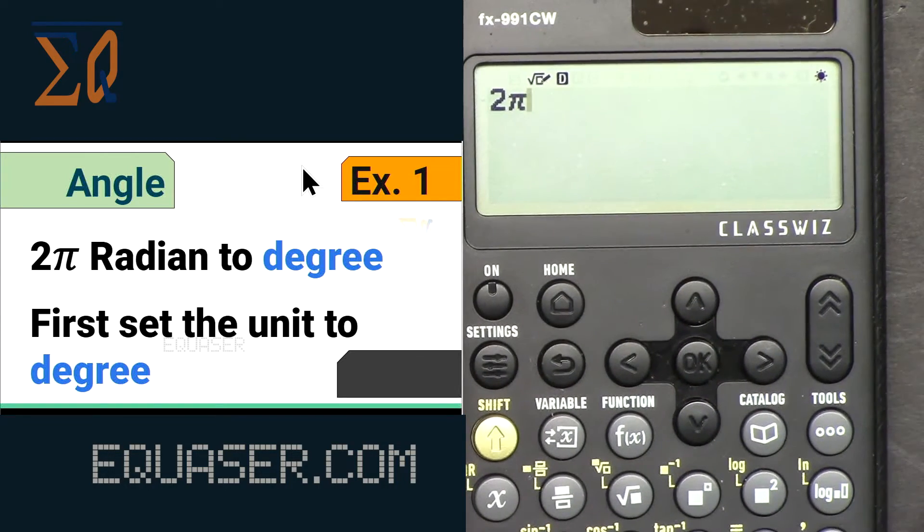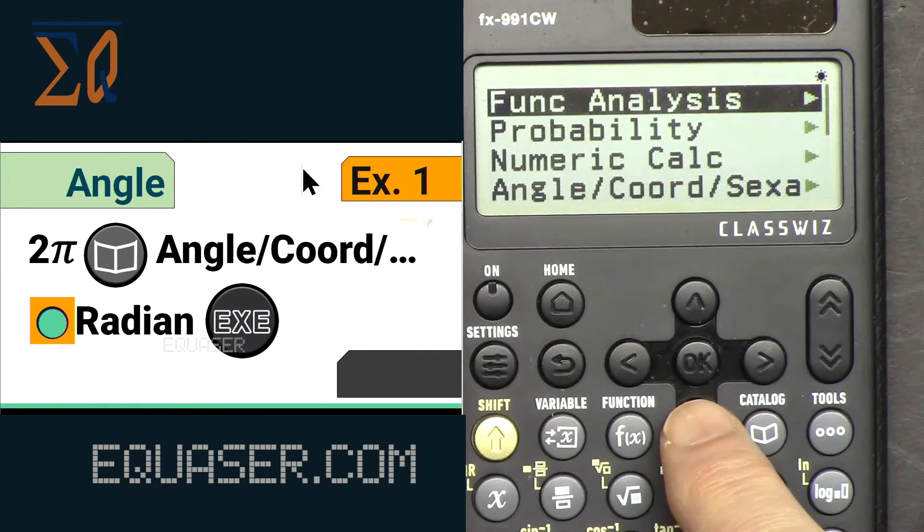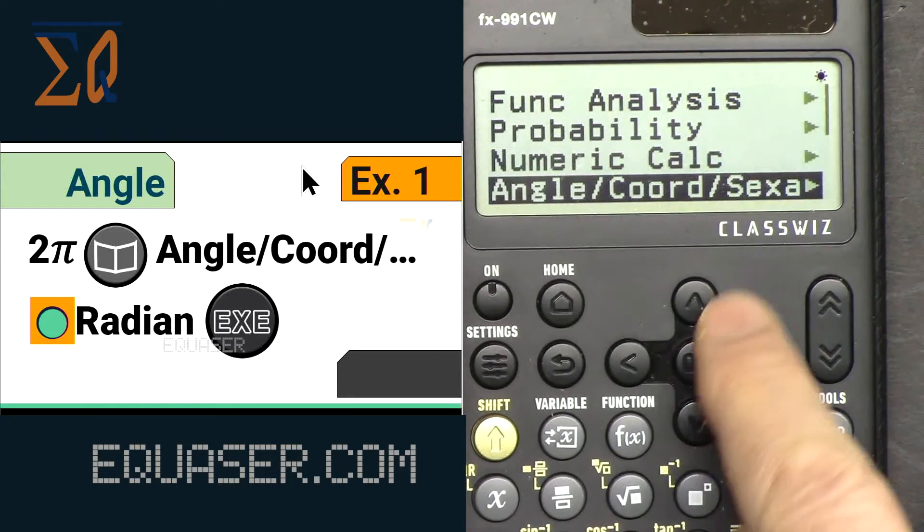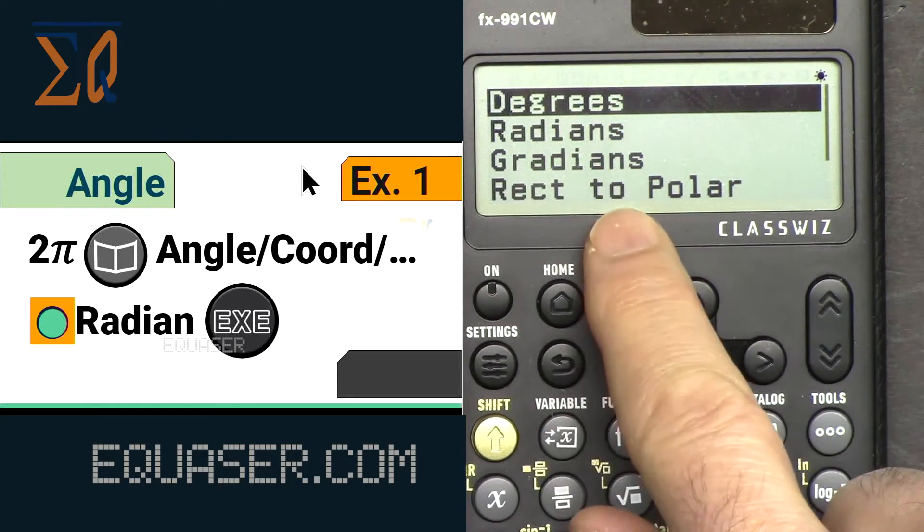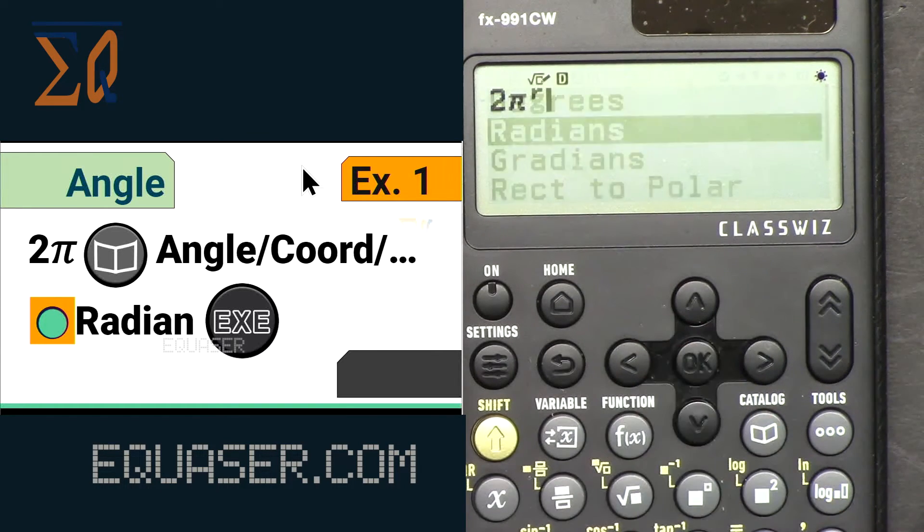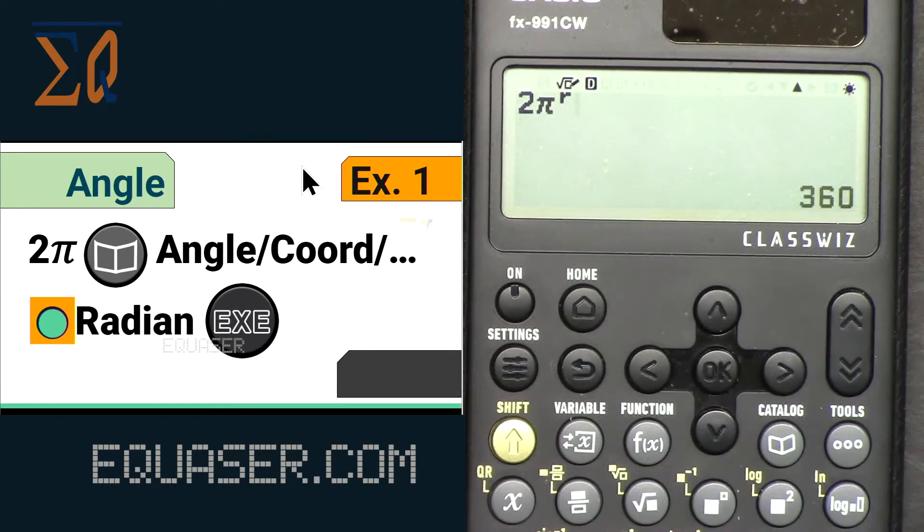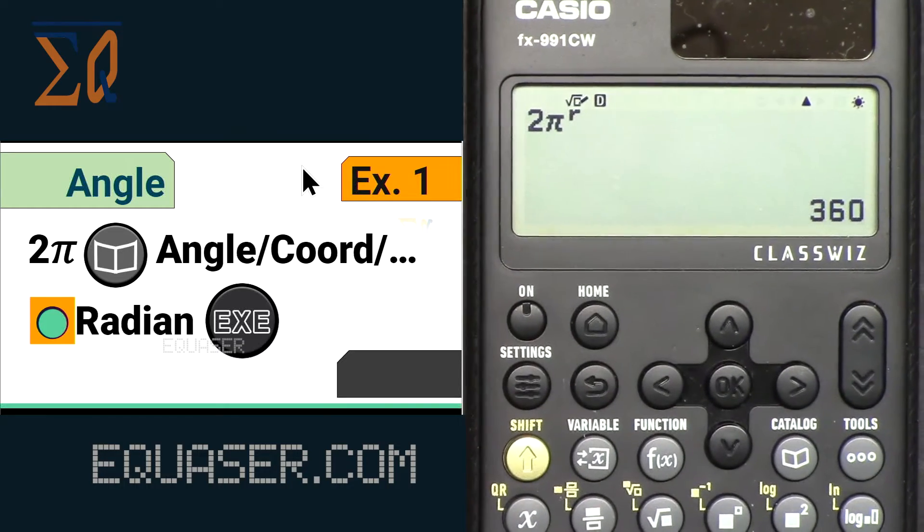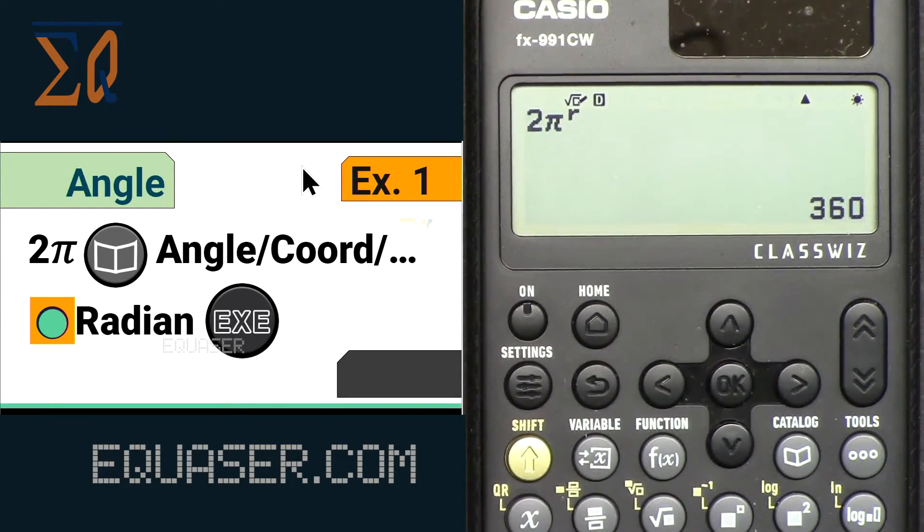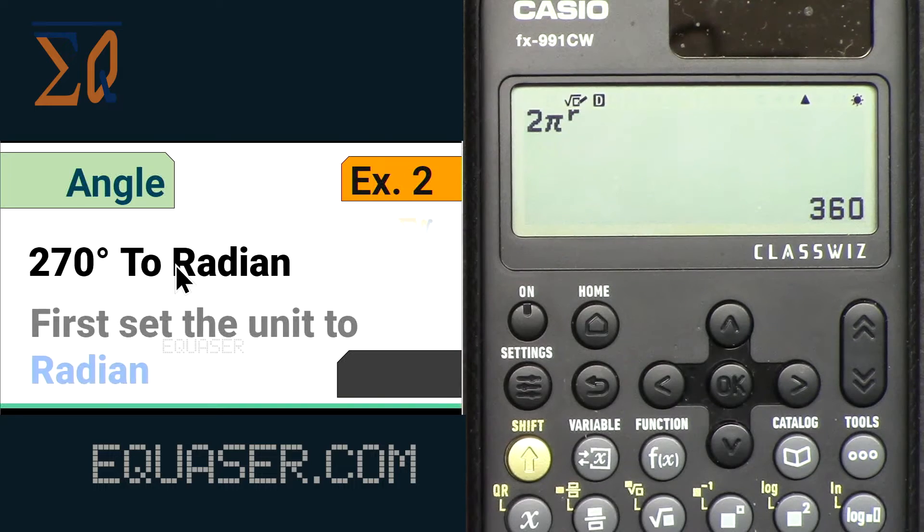Right now it's in degree. If it's not, go to Settings, Calculator Setting, Angle Unit. We're in degree mode. Press 2, Shift, and then 7. This is π. We got 2π. To convert it, Catalog, Angle Coordinate, and then select Radian because this is radian we're converting to degree. Press Equal or Execute and that's 360, that's the answer.